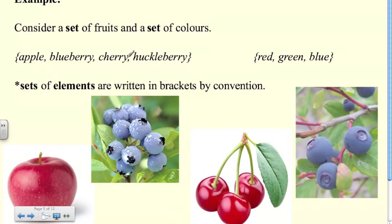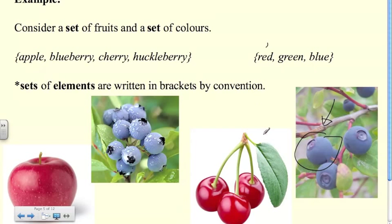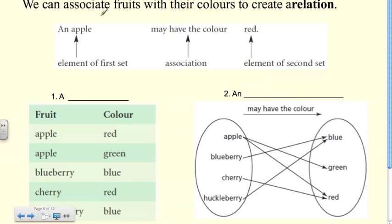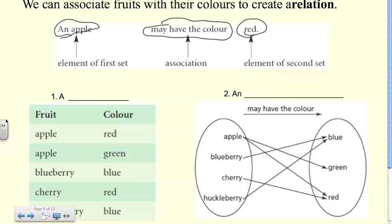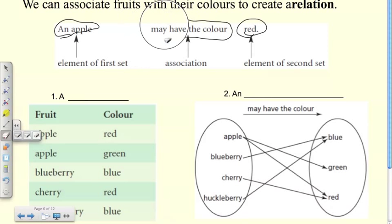Here's another example of sets of data. We have a set of fruit — apple, blueberry, cherry, and huckleberry — and a set of colors. We represent sets of elements using brackets, which is the typical convention you'll see in the textbook. We can associate fruits with their colors to create a relation, and the association we use is 'may have the color.' So an apple may have the color red.